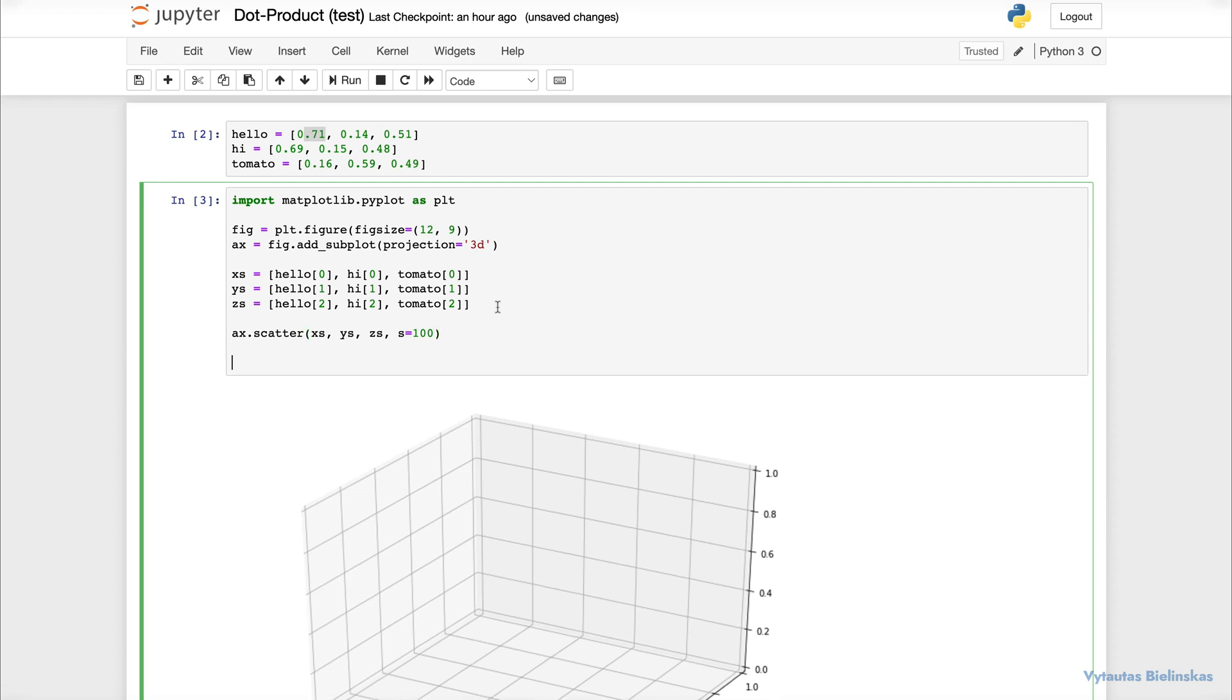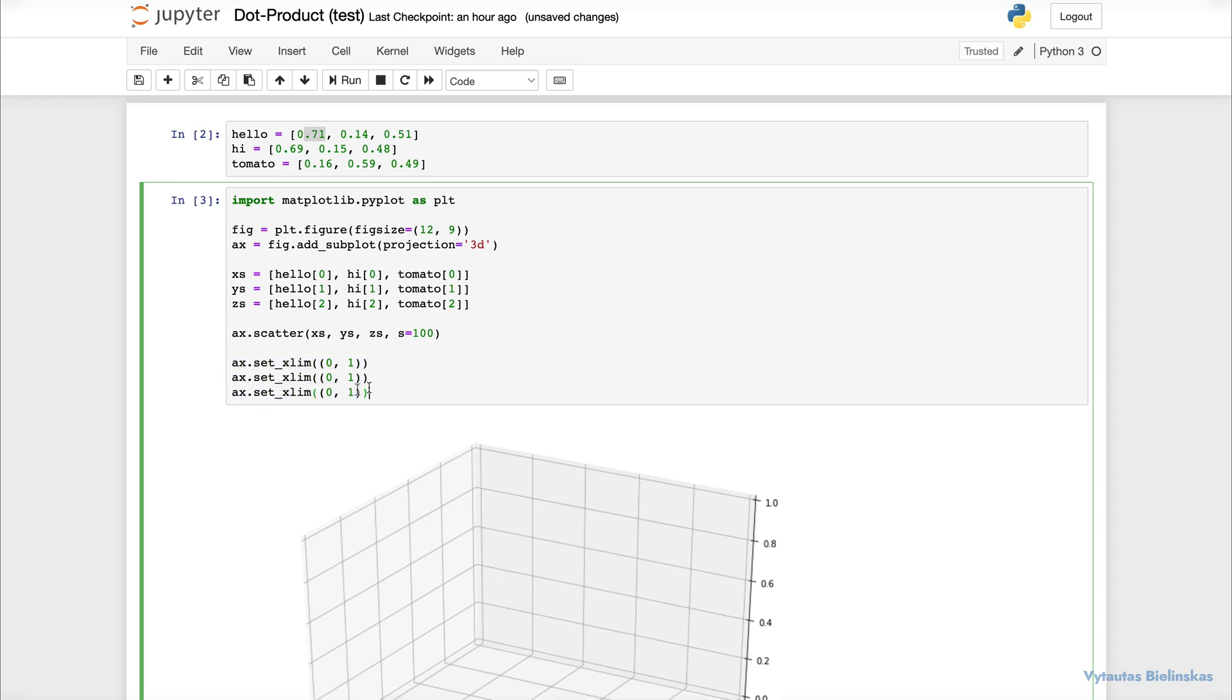Now this will zoom right in, so I want to see everything between 0 and 1. For this I need to set some limits into my plot. That I am doing right now. Just like that. Good. Let's do the same for all axes: x, y and z also.